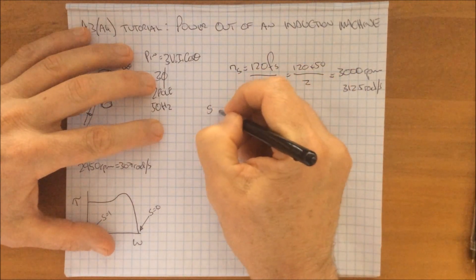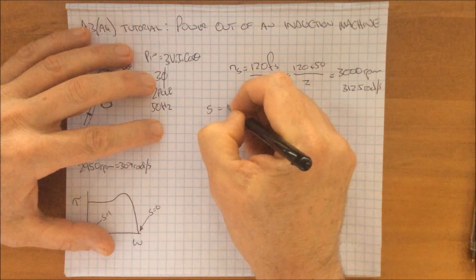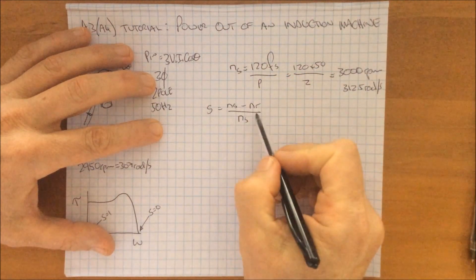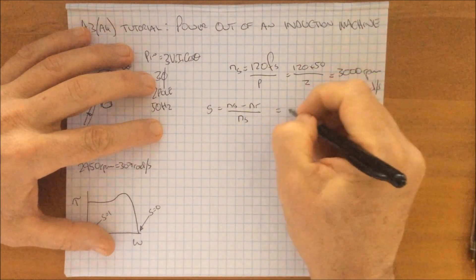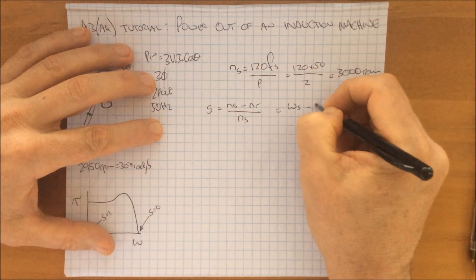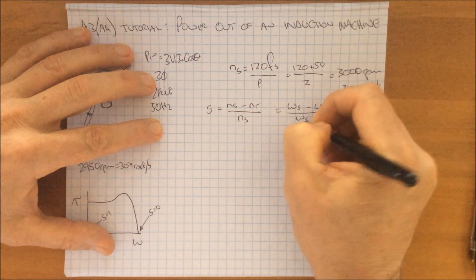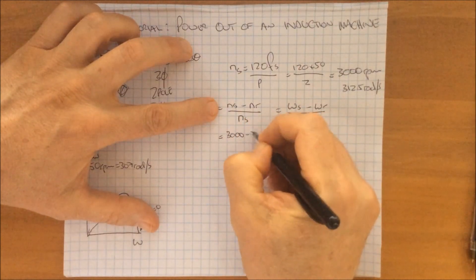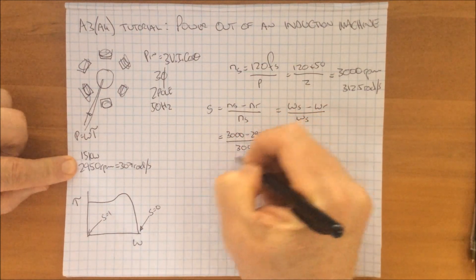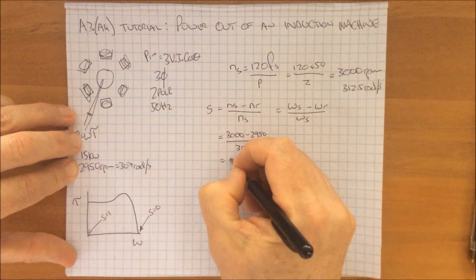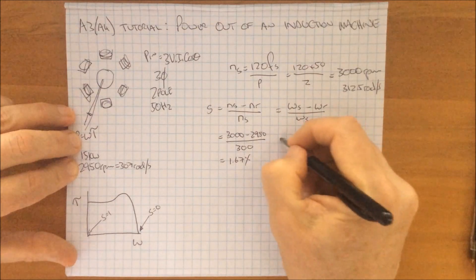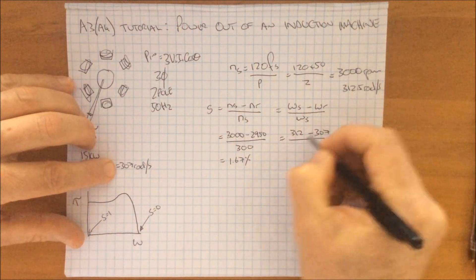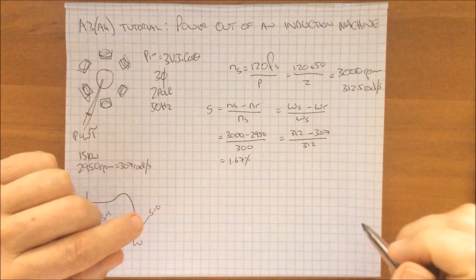We now know the synchronous speed — the speed that the field is going around — and we know the speed of the shaft, so we can figure out the slip. The slip of the machine is a ratio of the synchronous speed minus the rotational speed over the synchronous speed. It doesn't matter whether it's in rpm or radians — it's just a ratio. Using these numbers: 3000 minus 2950 over 3000 gives us a slip of 1.67%. You get the same answer in radians: 312 minus 307 over 312.